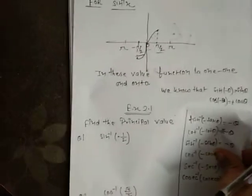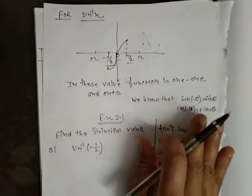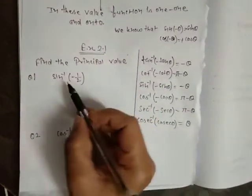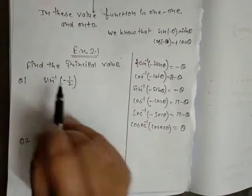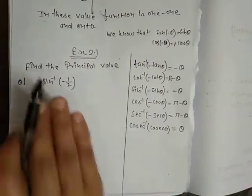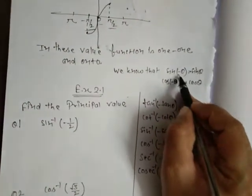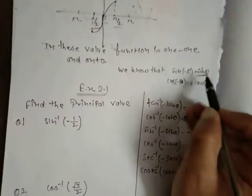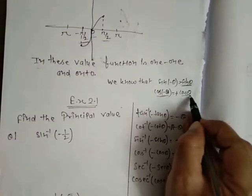I have told you a lot of background data, but it was just to help you understand. Now let's come to the exercise — it is very easy. The first question is to find the principal value of sine inverse of minus 1/2. First understand the question: sine of minus θ equals minus sin θ, and cos of minus θ equals cos θ.